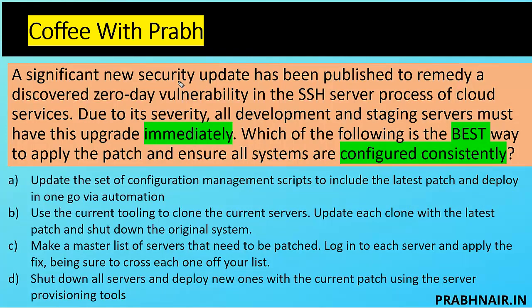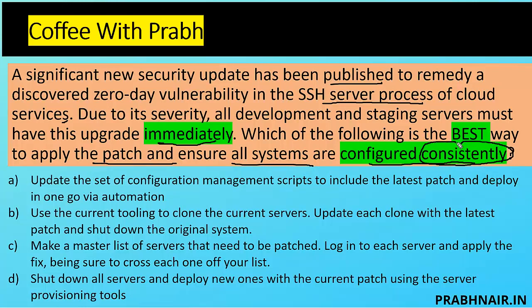A significant new security update has been published to remedy a discovered 0-day vulnerability in the SSH server process of a cloud service hosted on any server. Due to its severity, all deployment and staging servers must have this upgraded immediately. Whenever we go for any kind of upgrade, we need a downtime. Which of the following is the best way to apply the patch and ensure all systems are configured consistently? The keyword is 'consistently' — we need the same patch deployed in all systems which have that vulnerable SSH service.